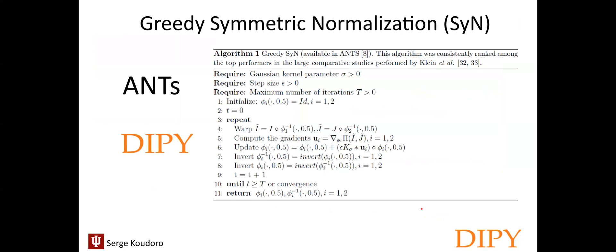Here is a quick summary of the SYN algorithm. After initializing some parameters, the greedy SYN algorithm registers two input images by computing two diffeomorphisms that map each input image toward the common reference domain. The final diffeomorphism is computed by composing these two partial diffeomorphisms. This algorithm can be found in ANTS, the original implementation, and we also have an implementation in Dipy. It ranks well in every competition for image registration, especially in medical imaging.